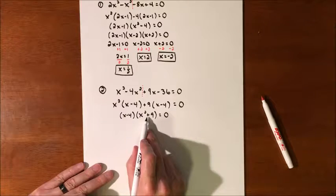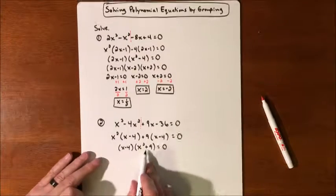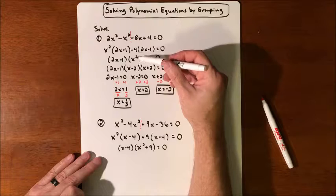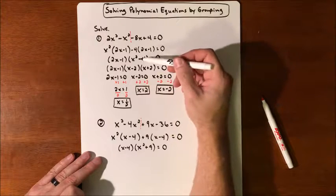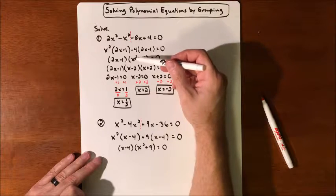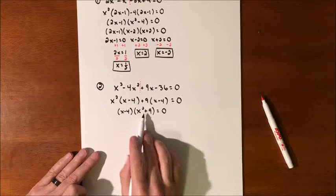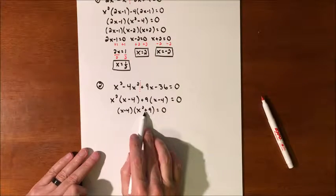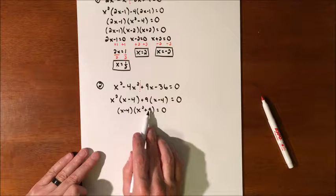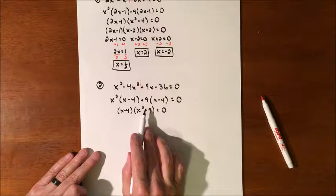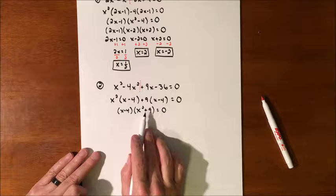Now, this one is not factorable because it's a little bit different than this last one. This is known as a difference of squares. So we have to have a subtraction sign and perfect squares separating them in order for this to be factorable. And this is an addition sign. So as soon as we have that, it doesn't matter if these are perfect squares. It has to be a difference of squares, which this is not the case.